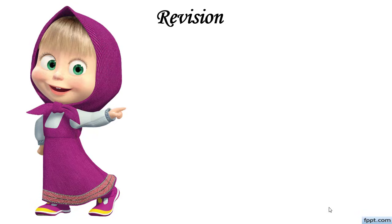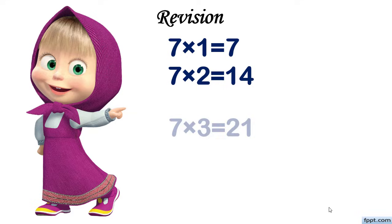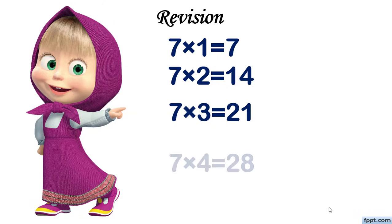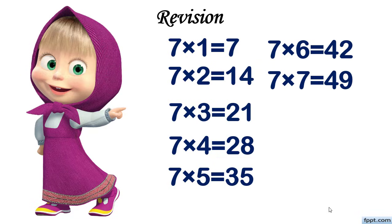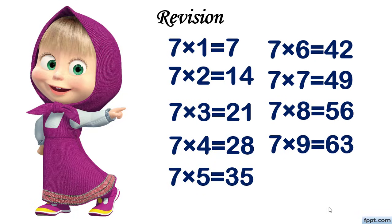Let's revise again children. 7 ones are 7, 7 twos are 14, 7 threes are 21, 7 fours are 28, 7 fives are 35, 7 sixes are 42, 7 sevens are 49, 7 eights are 56, 7 nines are 63, 7 tens are 70. Thank you children.